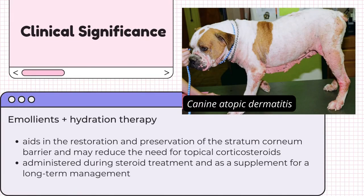Clinical Significance. In the case of canine atopic dermatitis, emollients can be effectively used, especially combined with dehydration therapy, as it will aid in the restoration and preservation of the stratum corneum barrier and may reduce the need for topical corticosteroids. It is administered during the course of steroid treatment and as part of long-term management.